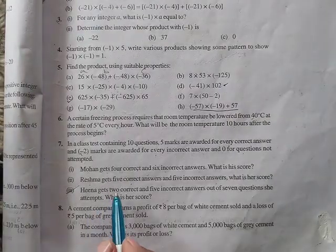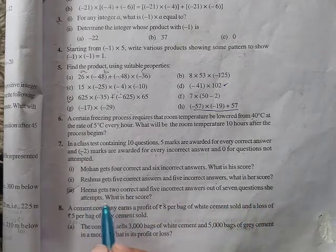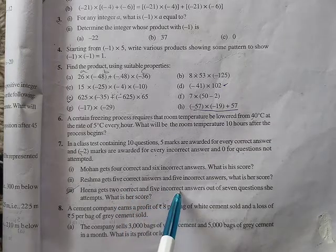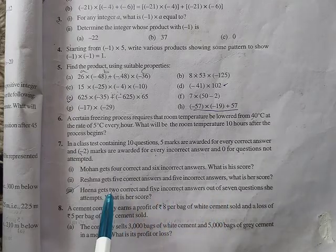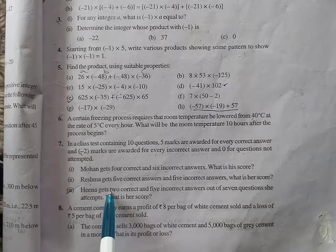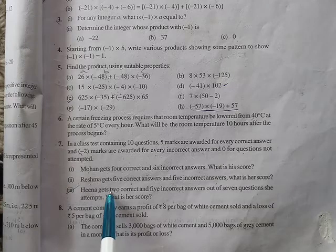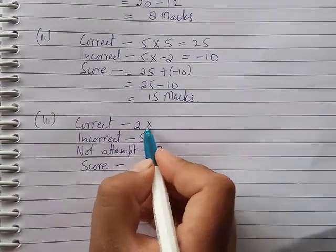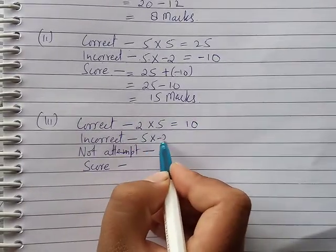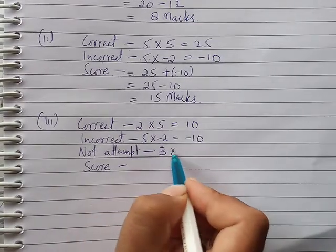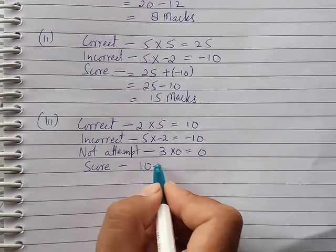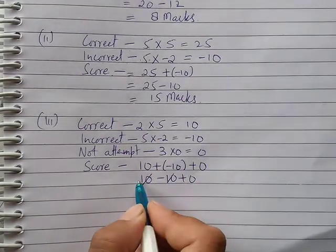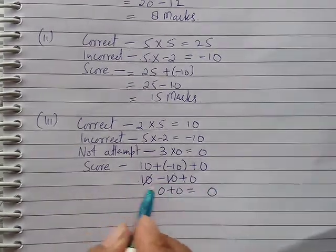Next part. Hina gets 2 correct and 5 incorrect answers out of 7 questions she attempts. What is her score? So 2 times 5 plus 5 times minus 2 plus 0 times 3. That equals 10 plus minus 10 plus 0, which equals 0 marks.